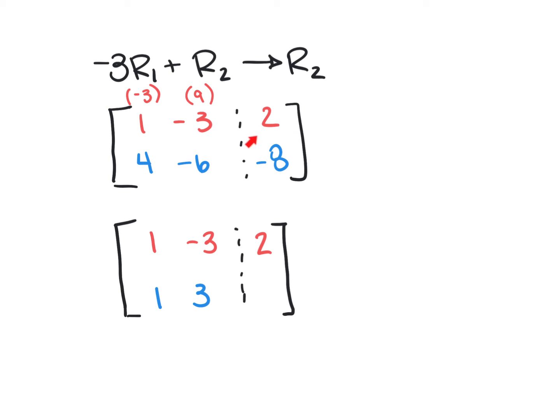And then again, one more time, I'm going to multiply this row 1 by negative 3, which gives me negative 6. And I'm going to add it, negative 6, add it to the negative 8. So it's negative 6 plus a negative 8, that's a negative 14.